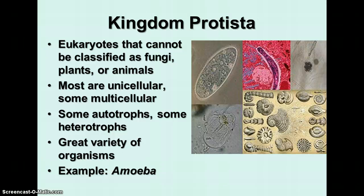Kingdom Protista is defined as eukaryotes that cannot be classified as fungi, plants, or animals. This is a kingdom that is kind of a catch-all — it's where you put things that don't fit anywhere else, and it probably will be subdivided. Scientists are in the process of developing sub-kingdoms or different groups within Protista. Most members are unicellular, but some are multicellular. Some are autotrophs, some are heterotrophs, and some can be both at various times. An example is the amoeba, a blob-like single-celled organism.